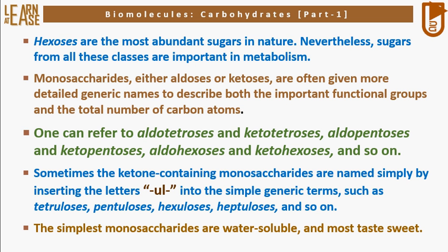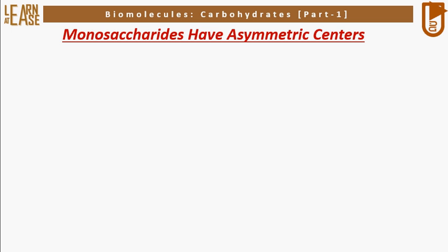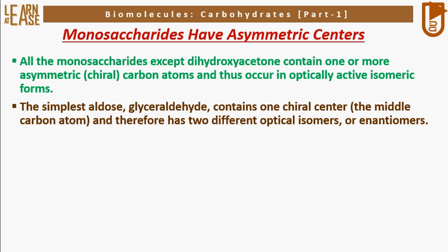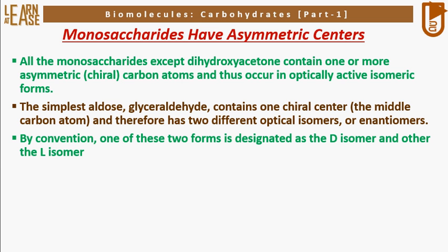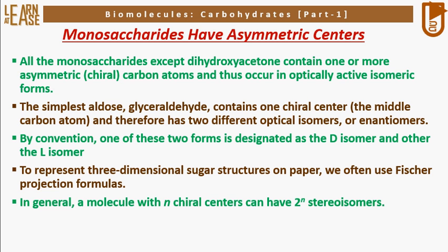The simplest monosaccharides are water-soluble and most taste sweet. Now I will discuss isomeric properties of monosaccharides. Monosaccharides have asymmetric centers — all monosaccharides except dihydroxyacetone contain one or more asymmetric chiral carbon atoms and thus occur in optically active isomeric forms. The simplest aldose, glyceraldehyde, contains one chiral center and therefore has two different optical isomers, or enantiomers. By convention, one form is designated the D-isomer and the other the L-isomer. To represent three-dimensional sugar structures on paper, we often use Fischer projection formulas. In general, a molecule with N chiral centers can have 2^N stereoisomers.